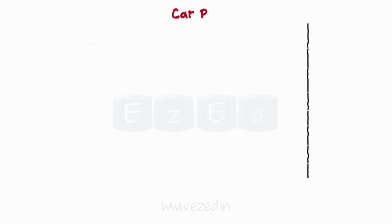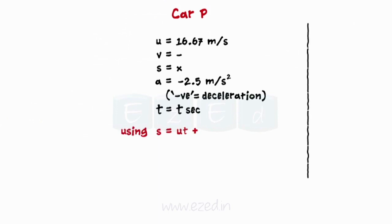Consider motion of car P. Write whatever is given for car P. As the motion shows uniform acceleration, use the equation for uniform acceleration. On substituting the respective values, we get equation 1.